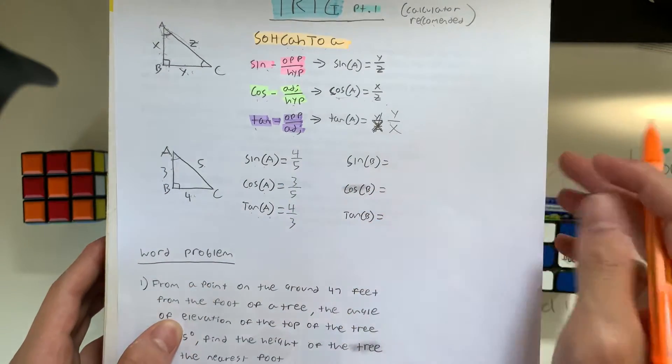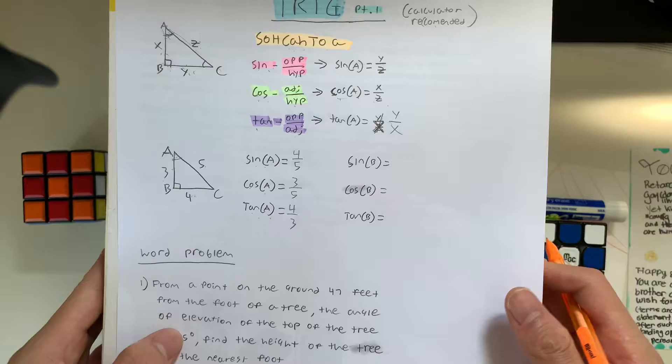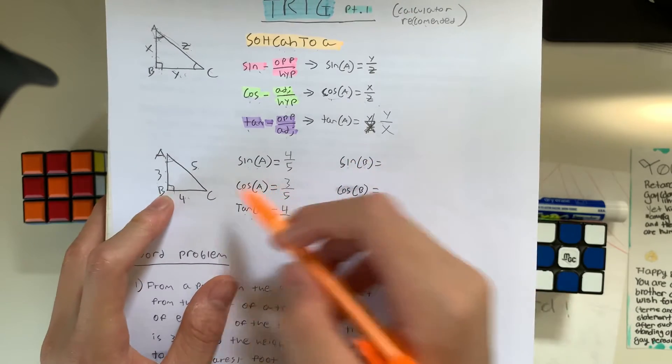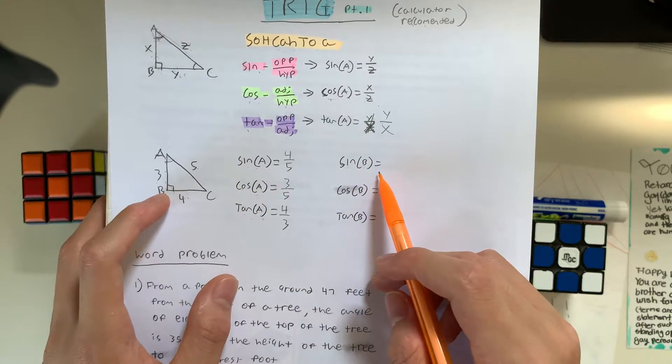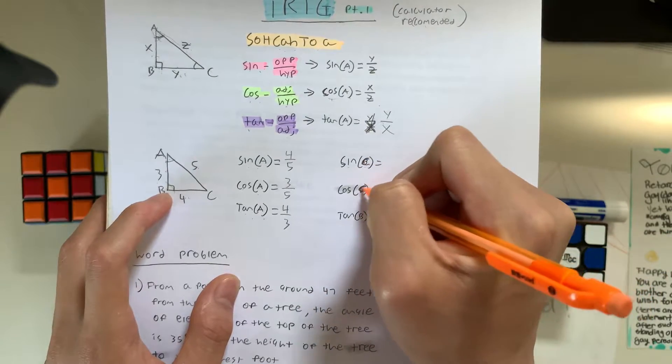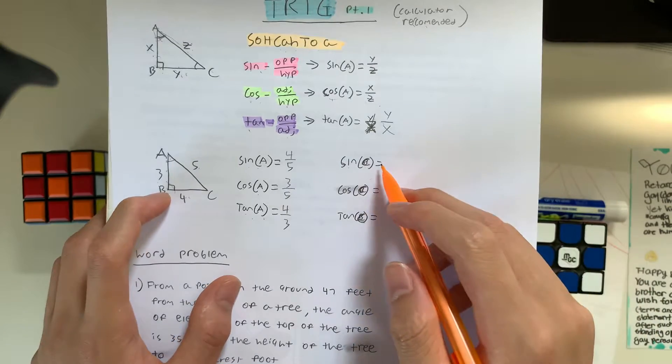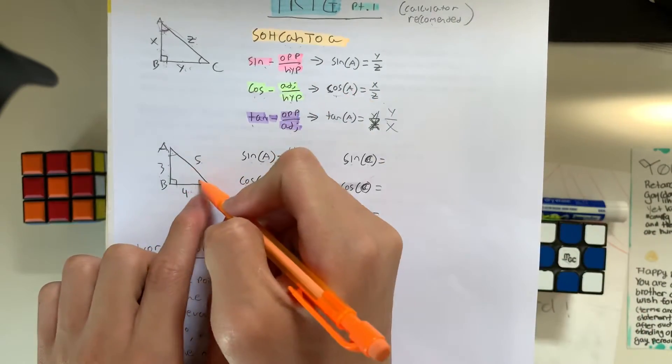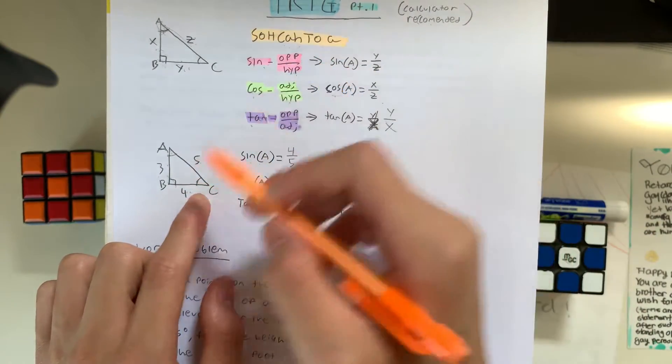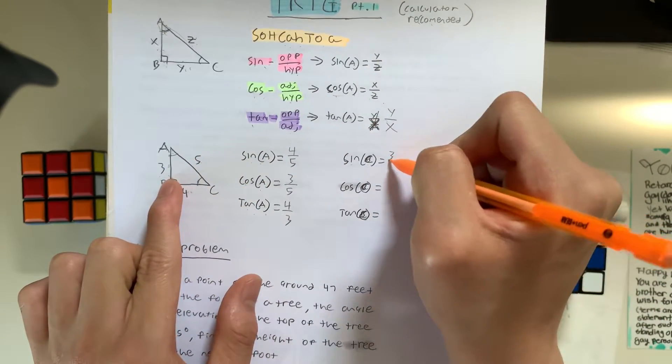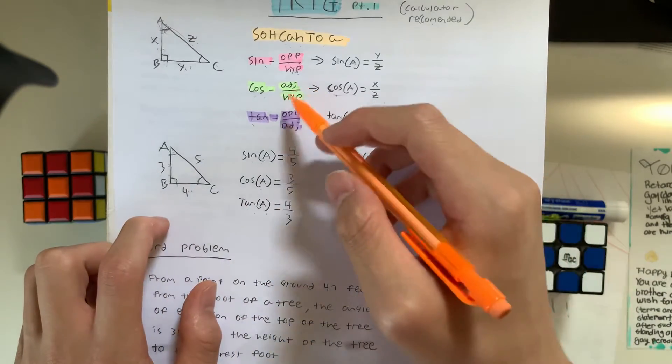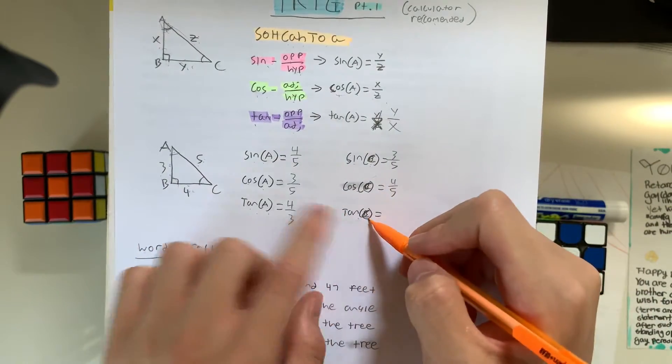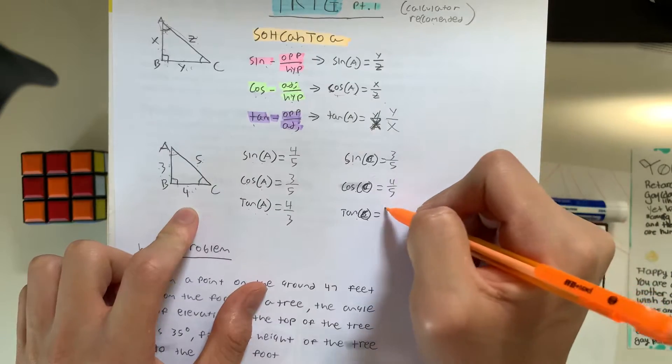So you guys can try for angle B. Pause the video if you need to. But let me begin. So sine of B. So this is angle B right here. So sine is... Oh, I meant to do angle C. Yeah, it's supposed to be angle C, guys. I wrote that wrong. Alright guys, change all the Bs to Cs. So pause the video if you have to and do it again. So angle C is this one right here. So opposite over hypotenuse, 3 over 5. Then we have cosine, adjacent over hypotenuse, 4 over 5. And lastly, we have tangent of C, which is opposite over adjacent. So that's 3 over 4.